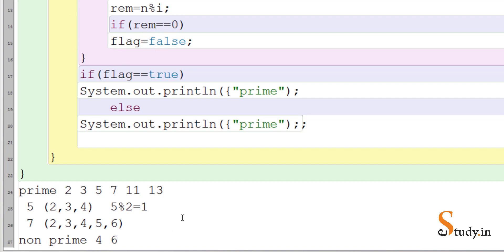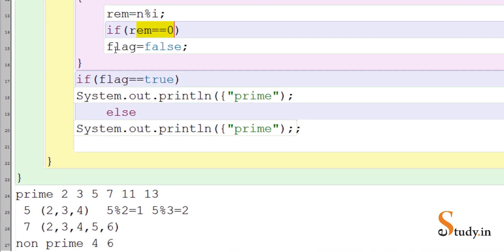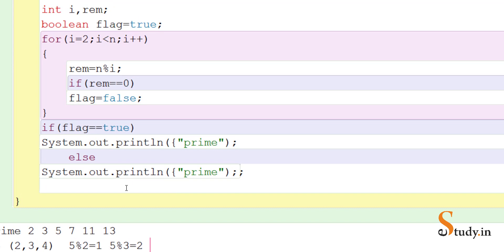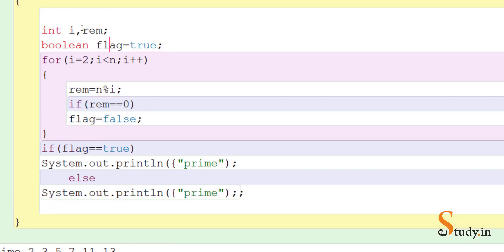In the next iteration i becomes three, so we do five mod three. Dividing five by three, the remainder is two — condition is not true, flag does not change. Then i becomes four: five mod four, the remainder is one — again not executed. Then i becomes five, so the condition i less than five is false and we exit the loop. The value of flag is still the original value, true, so we know it is a prime number.